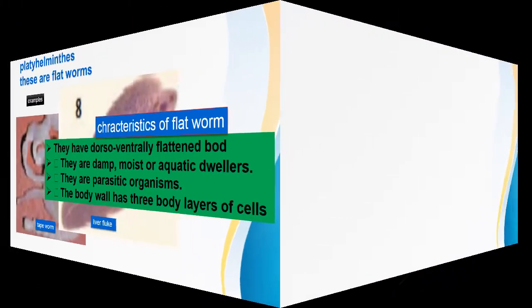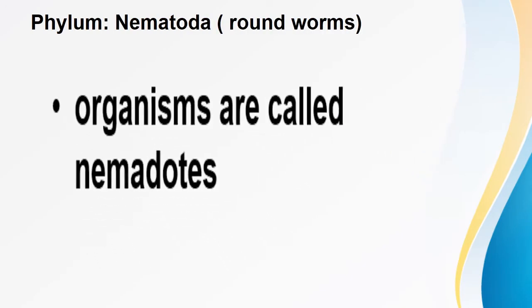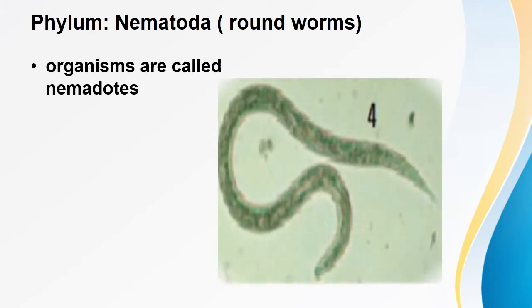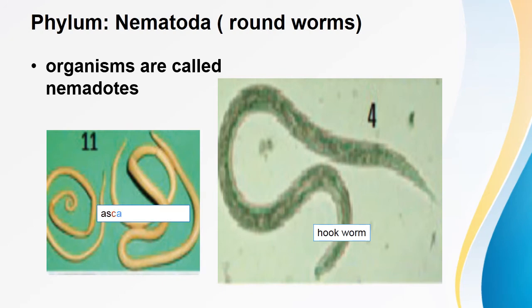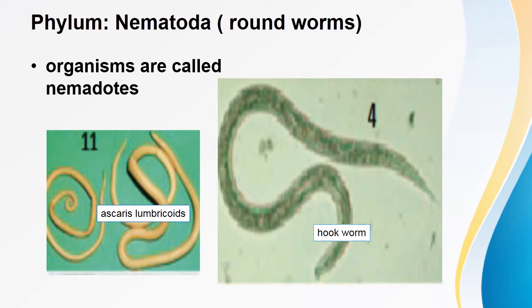Phylum Nematoda — this is the phylum for roundworms. Organisms in this phylum are called nematodes. Examples include hookworm and Ascaris lumbricoides. Characteristics of nematodes: they have elongated and cylindrical bodies pointed at both ends. They have a closed circulatory system. Gaseous exchange occurs all over the body surface. They have a complete digestive system with both mouth and anus. Some are parasitic and others are free-living.